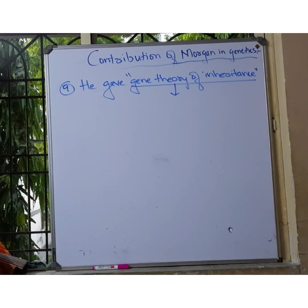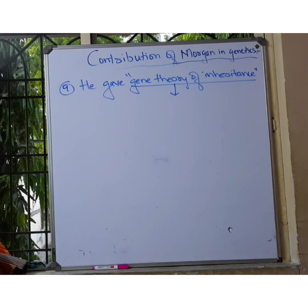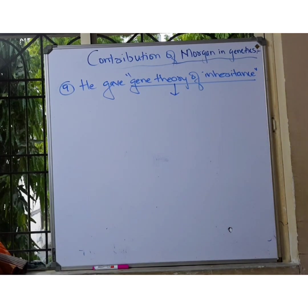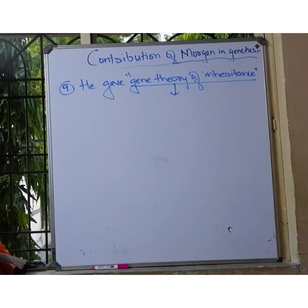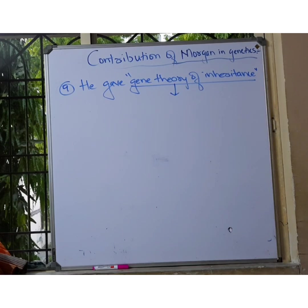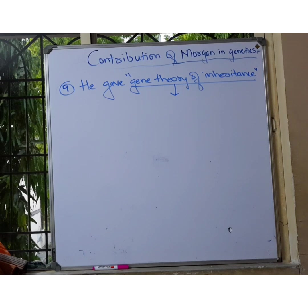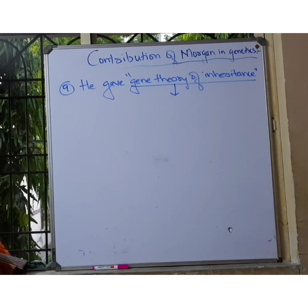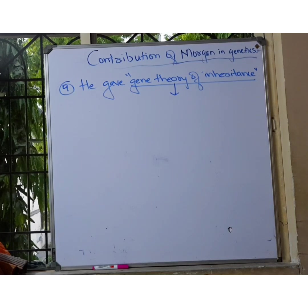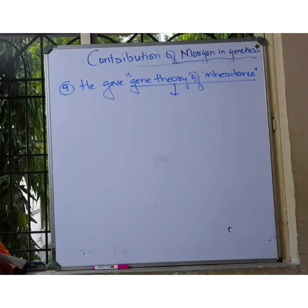Morgan also proposed the gene theory of inheritance. The gene theory of inheritance simply means that genes are located on specific chromosomes only, and even on a specific chromosome they are at a specific position. For example, in humans with 46 chromosomes, if a gene X is located on chromosome number 1, then in all humans on Earth that gene will always be on chromosome number 1 at a fixed position. This is the gene theory of inheritance.